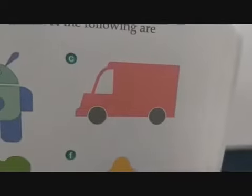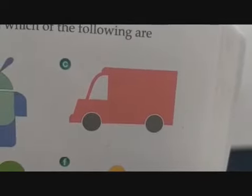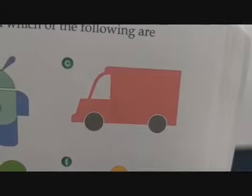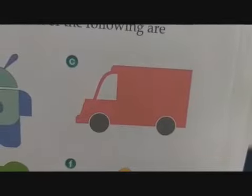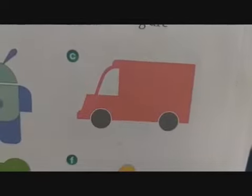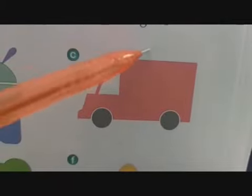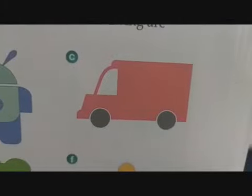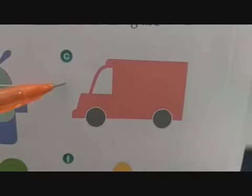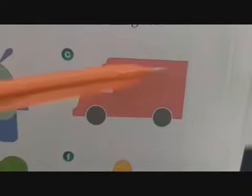Now picture C — here is a van, or a four-wheeler. If I draw a vertical line of symmetry from the middle, then the figure would be changed. If I draw it horizontally, then also it will not be appropriate. So we can say that the picture of the van is not symmetrical.